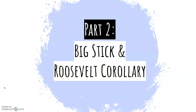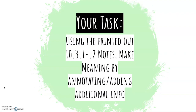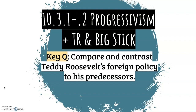This is part two of our flipped classroom for September 30th. We are going over 10.3.2, Teddy Roosevelt and Big Stick Diplomacy. Remember that you should be using the notes that I printed out and gave to you last class, annotating and making meaning out of them, adding examples, drawing out the connections, adding the greater themes and any additional essential information. By the end, you will be able to answer the prompt: compare and contrast Teddy Roosevelt's foreign policy to his predecessors.